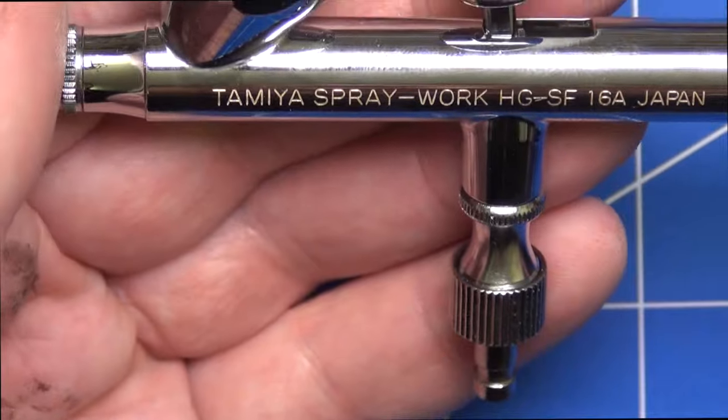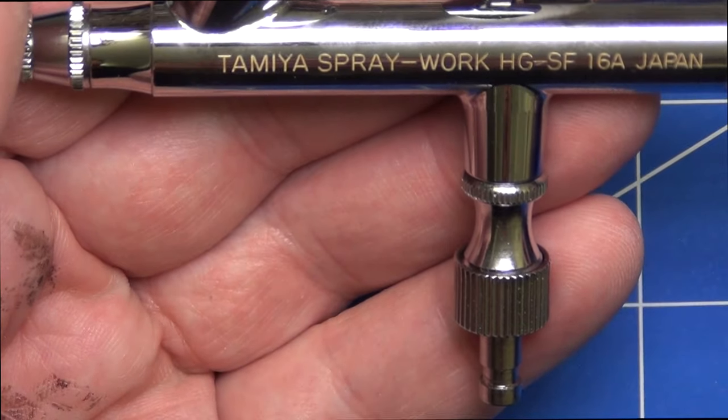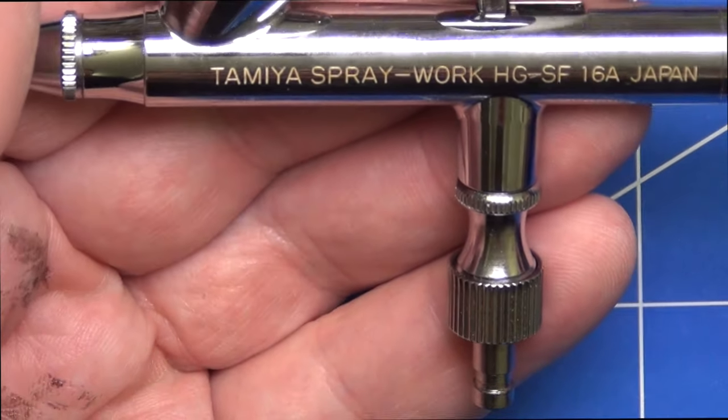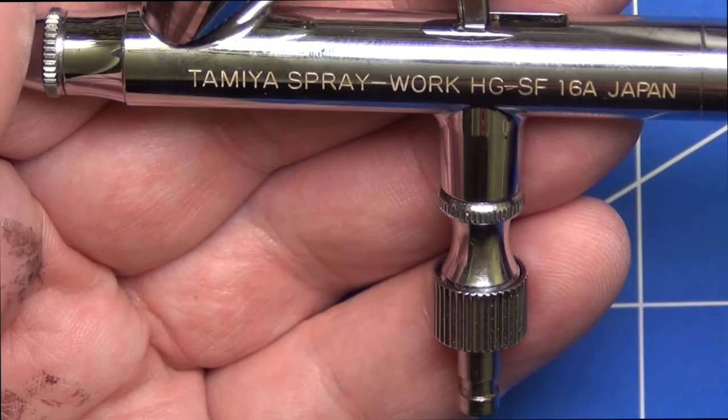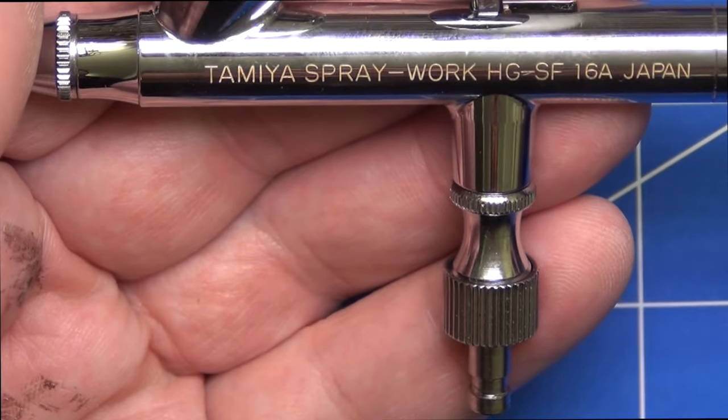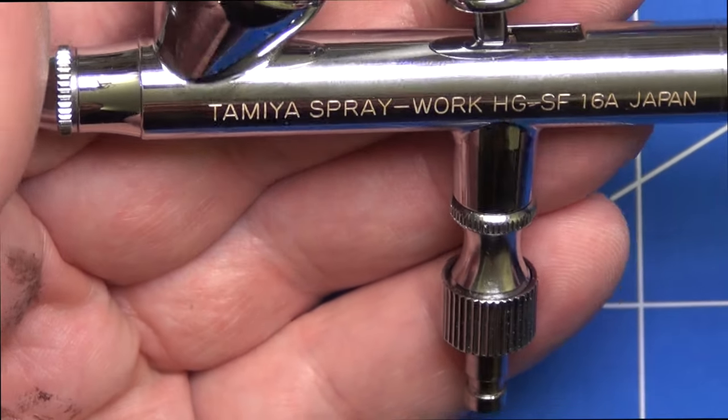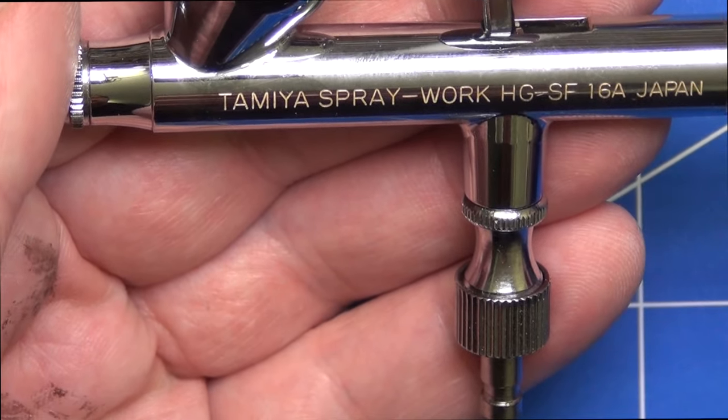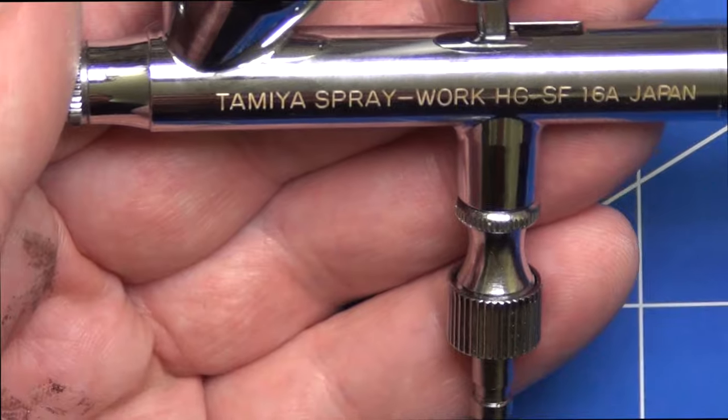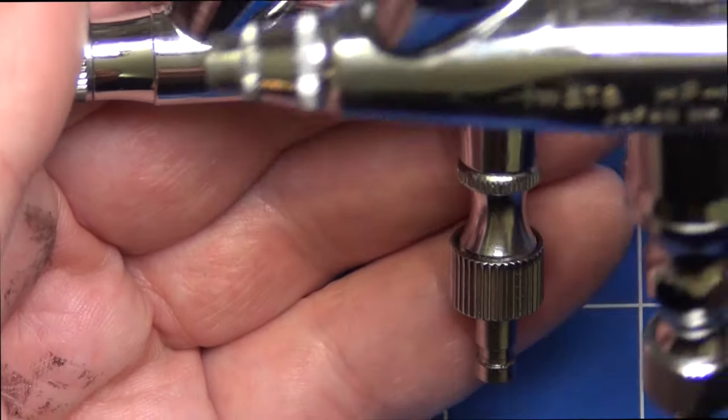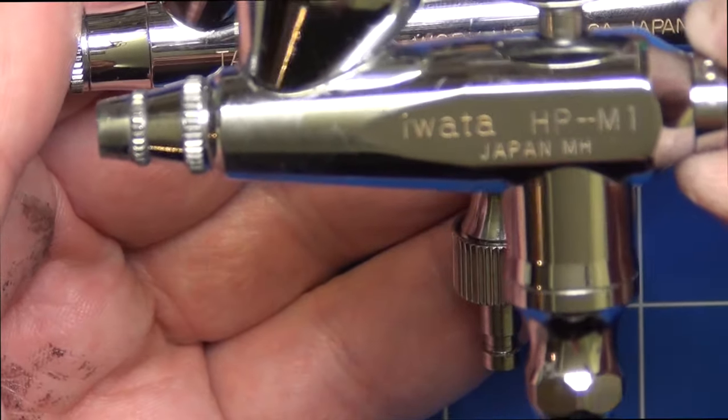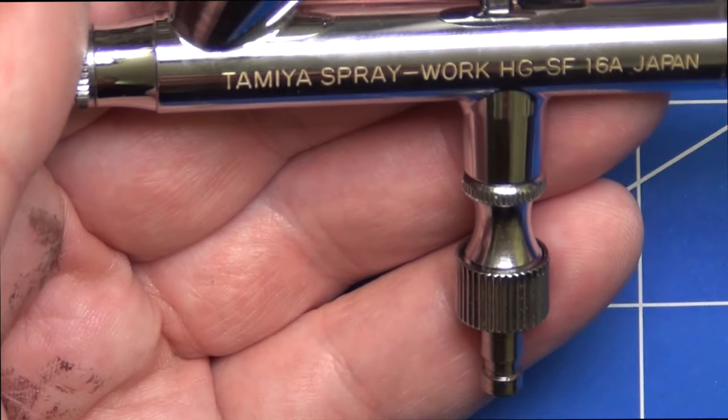In Australia you can't get the Tamiya branded airbrushes at all and it's a great shame so I had to import this one as I said earlier. I'm not sure how many markets in which they do sell them. I suspect these are only sold in Japan and in the US, so for the rest of us we're expected to buy another brand from the same manufacturer like the Iwata.